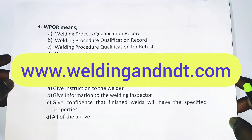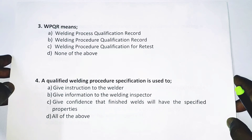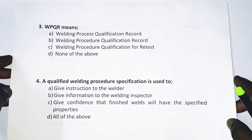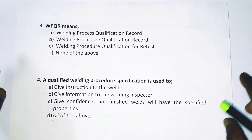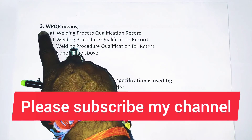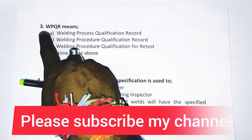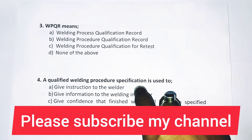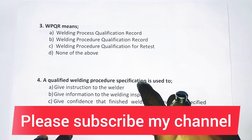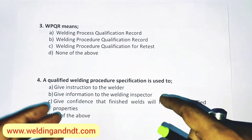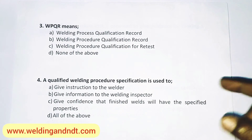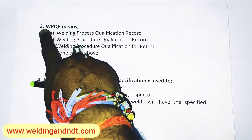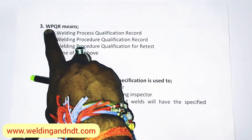Friends, let's start with the question answer for chapter 6, that is WPS or welder qualification test. We'll start with question number 3 because question numbers 1 and 2 were basically belonging to welder qualification, which I'll explain later. So we'll start with question number 3 straight away.